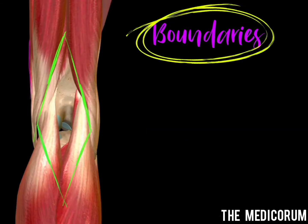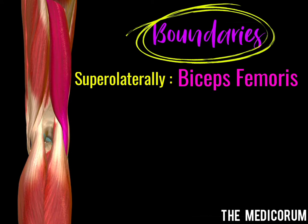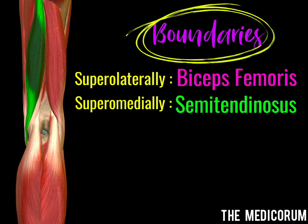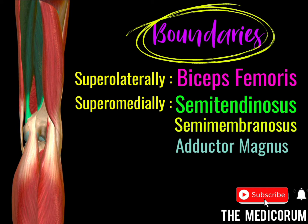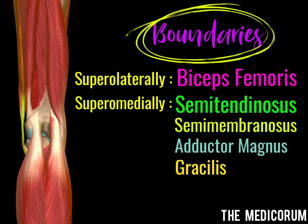Boundaries of the popliteal fossa. Superolaterally, we have the biceps femoris muscle, and superomedially, we have the semitendinosus. Other muscles also contribute to forming the boundary. When we remove the semitendinosus, we find the semimembranosus, and after removing the semimembranosus, we have the adductor magnus. On the side of the thigh, we have the gracilis. All four of these muscles form the superomedial boundary of the popliteal fossa.